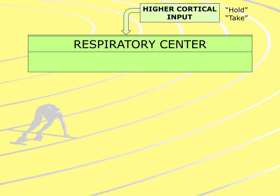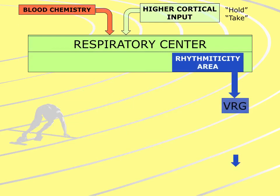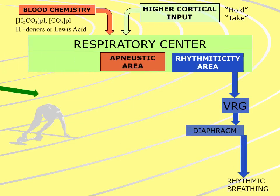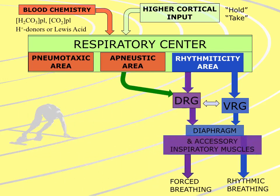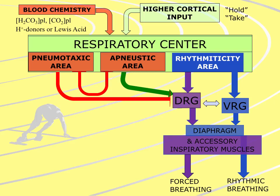The respiratory center will be registering normal blood chemistry, but will also be receiving cognitive input such as holding your breath or taking a breath. The blood chemistry registers changes in bicarbonate and carbon dioxide, as well as changes in the concentration of hydrogen donors or Lewis acids within the blood. These interact with the rhythmic center, which sends a signal to the VRG, causing the diaphragm to contract and leading to normal rhythmic breathing.